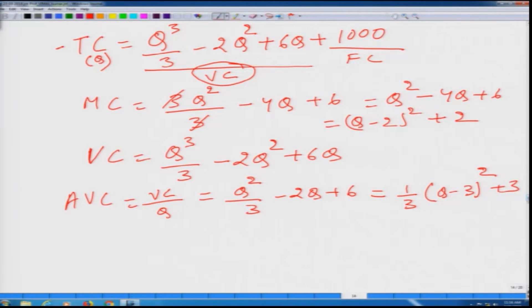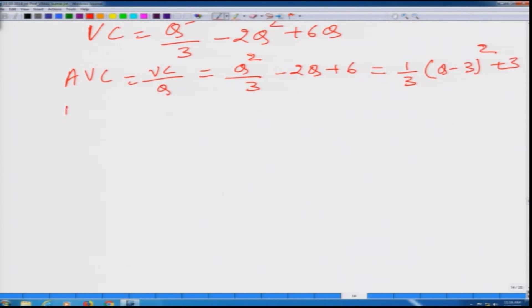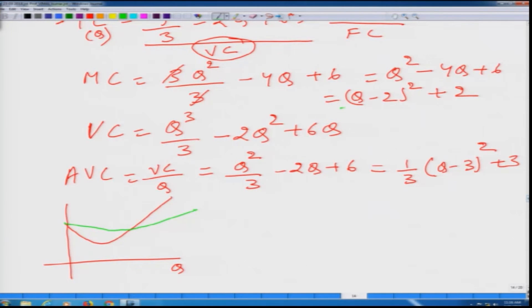Now we need to figure out if we draw it, how it is going to look like. Let us say that here we have q, here the marginal cost decreases and then it increases, and average variable cost is like this. Of course it is not very accurate description, and it is clear from this equation that the marginal cost attains minimum at q equal to 2. This component has to be positive or non-negative, that is more appropriate.